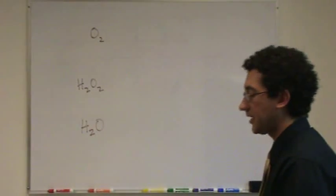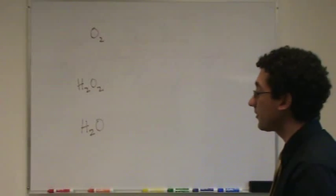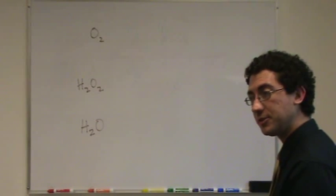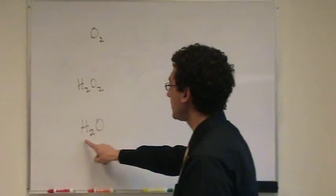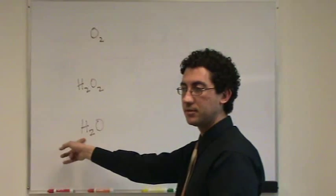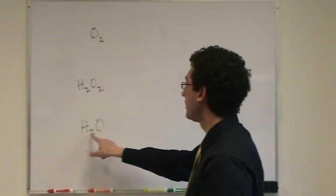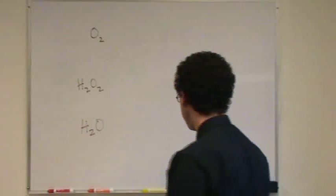Alright, so oxidation states for oxygen can vary. Mostly it's negative 2, and that's here, the example case on the bottom. Hydrogen, what's his charge? Yeah, plus 1. So oxygen has to be minus 2 here.